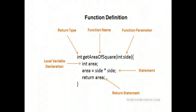This is the basic structure of function definition. Here, int is the return type, getAreaOfSquare is the function name, and function parameter is int side.